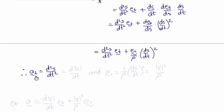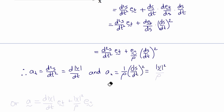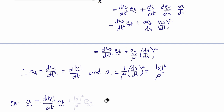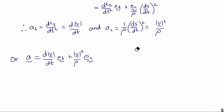Therefore the tangential component of acceleration is d²s/dt², or equivalently dv/dt where v here is the magnitude of the velocity vector. The normal component of acceleration is (ds/dt)²/ρ, or the magnitude of velocity squared divided by ρ. So the acceleration vector has tangential component d|v|/dt and normal component |v|²/ρ pointing in the normal direction eₙ.